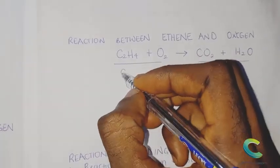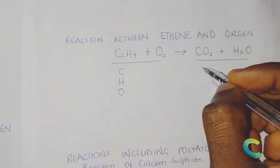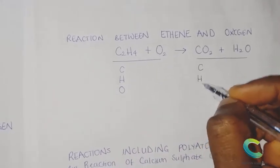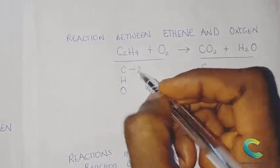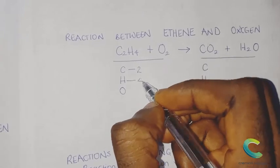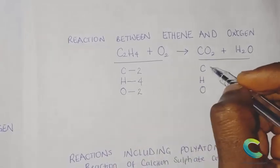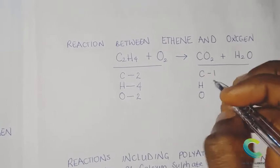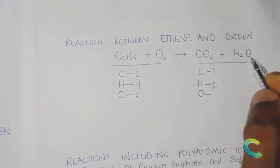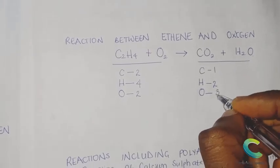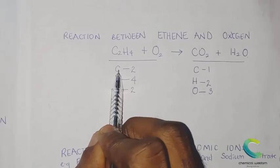Step one says list out the atoms on both sides. On the left-hand side we have carbon, hydrogen, and oxygen. On the right-hand side we also have carbon, hydrogen, and oxygen. The number of carbon atoms on the left is two, hydrogen atoms on the left is four, and oxygen atoms on the left is two. On the right we have one carbon atom, two hydrogen atoms, and three oxygen atoms (two plus one).